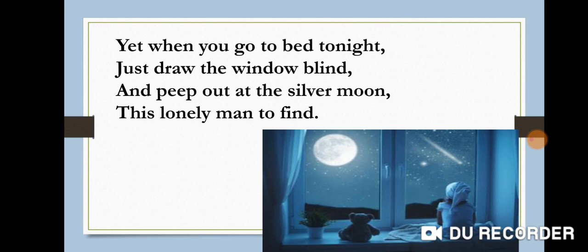Just like on WhatsApp many people have said they have seen Sai Baba or different kinds of gods on the moon — that is how they are picturizing it. It does not really happen, but they picture such things. And so the poet says that when you are sitting in front of the open window at bedtime, just look out at the silver moon and try to find that lonely man who lives on the moon.